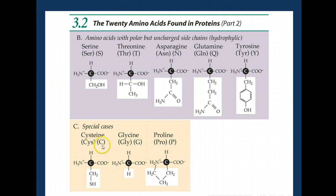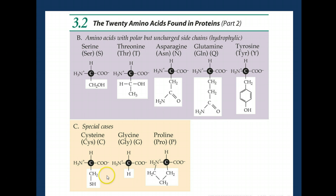The special cases are cysteine, glycine, and proline. Proline is a special case because its side chain forms a covalent bond with the amino group. Glycine is a special case because it just has a hydrogen as a side chain — the smallest thing it could possibly be. And cysteine is a special case because the sulfur group is going to form covalent bonds with other cysteines and make cross-links between polypeptide chains. We'll come back and talk about that in another lecture.